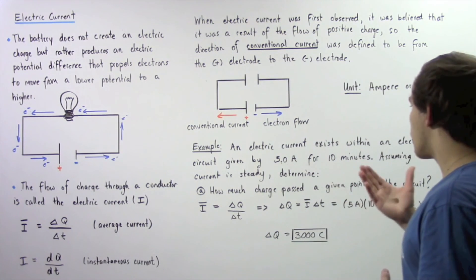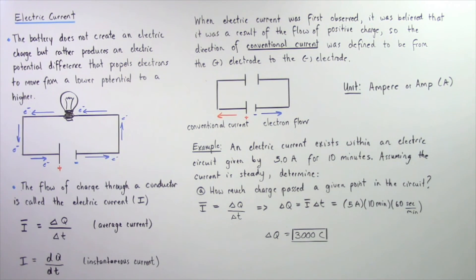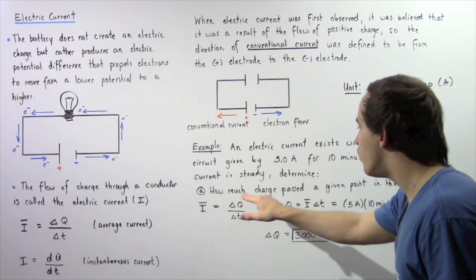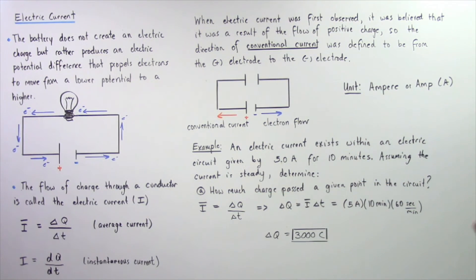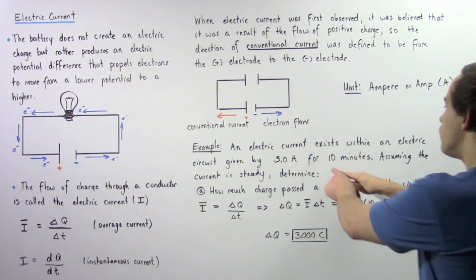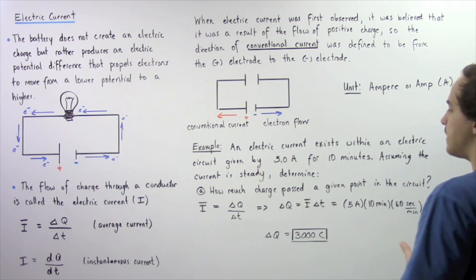So an electric current exists within an electric circuit given by 5 amps, and it exists for 10 minutes. So assuming the current is steady, determine how much electric charge past a given point in the circuit over this time interval of 10 minutes.